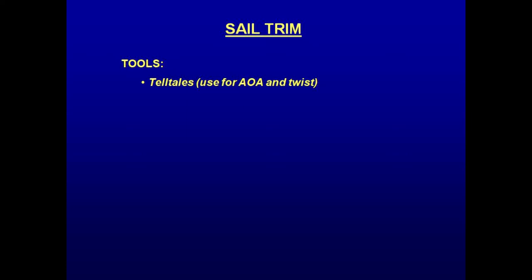The crew has several tools available to aid in trimming the sails correctly. Telltales in the forward portion of the jib can be used to help steer the boat to the correct angle of attack and to position the jib chic cars. Speed stripes, sometimes called draft stripes, can be used to estimate draft and twist.